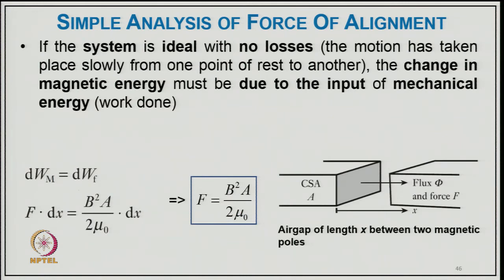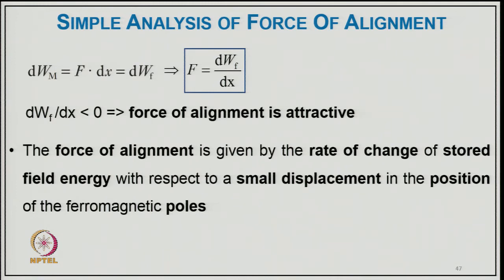If the system is ideal with no losses and motion takes place slowly from one point of rest to another, the change in magnetic energy must equal the input of mechanical energy (work done). So δW_m = δW_f, giving F·dx = B²A/(2μ₀)·dx, and therefore F = B²A/(2μ₀). This is the force of attraction between two parallel surfaces. Since dW_f/dx < 0, the force of alignment is attractive, given by the rate of change of stored field energy with respect to a small displacement in the position of the ferromagnetic poles.